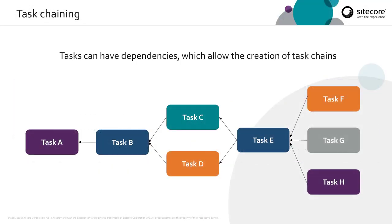Tasks can also have dependencies, which allow the creation of what we see here with these task chains, which can have a fan-in, fan-out effect. The direction of the arrows here is the direction of the dependency, so you can see that task B depends on task A. A single task cannot run until all of its dependencies and the dependencies' dependencies have run. So for example, task C here cannot run until both task A and task B have been completed.